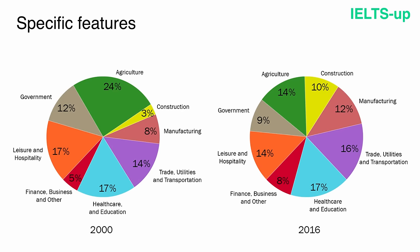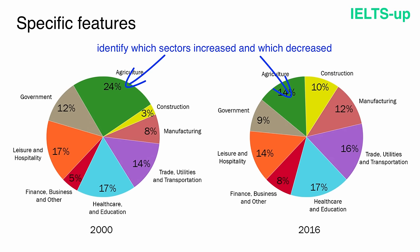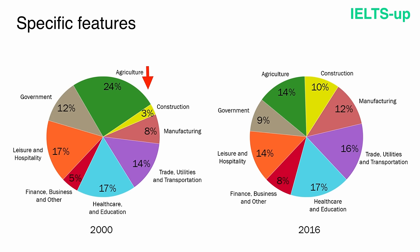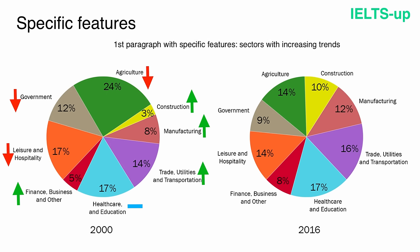We need to look at the chart and identify which sectors increased and which decreased. Agriculture went from 24% on the first chart to only 14% on the second — clearly a decrease. Healthcare and education had no change, so I've put a dash near it. In the first paragraph with specific features, I will describe sectors with increasing trends: Construction, Trade utilities and transportation, Manufacturing, and Finance, business and other services.